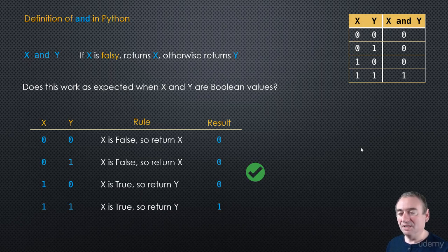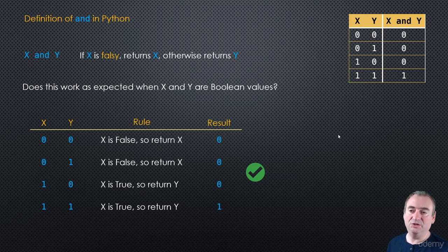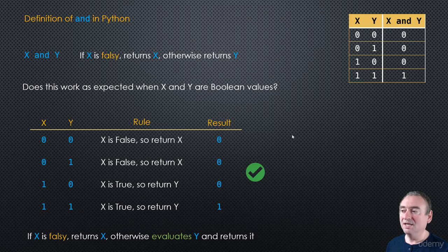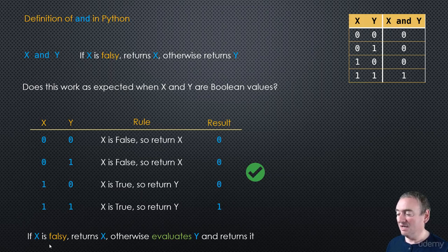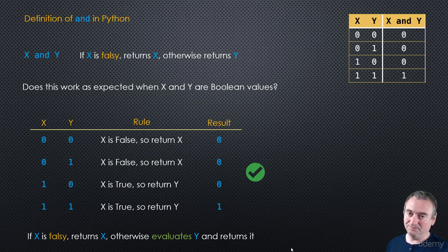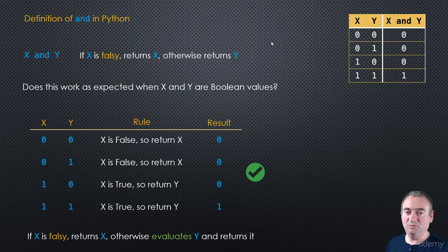For the same reason as OR, y doesn't actually get evaluated unless it gets returned. So again, we have short-circuiting: if x is false, we just get false back and y will never be evaluated. Our definition really is: if x is false, return x; otherwise, evaluate y and return it. This returns the operands we pass in — operands could be Booleans giving us the usual results, or we could pass in any objects.